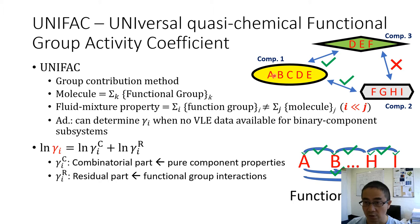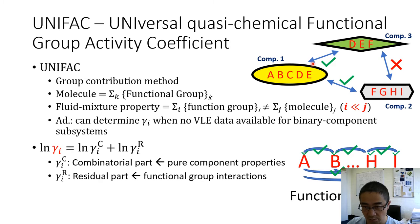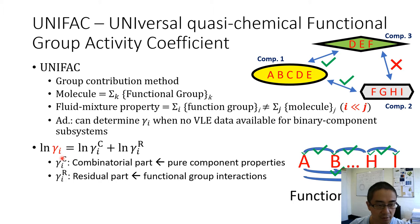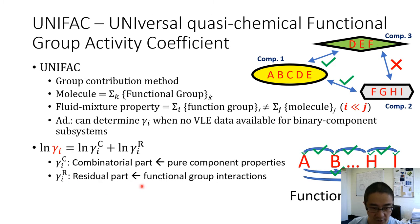For example, with a liquid mixture of three components, other approaches like NRTL require VLE data for all three binary subsystems (1-2, 2-3, 1-3). With UNIFAC, if you don't know the VLE data for a given binary pair, it's acceptable as long as you know the properties of all functional groups and their interactions. In UNIFAC, the activity coefficient has two parts: a contribution from pure component properties, and a contribution from the interactions between functional groups — not between molecules.